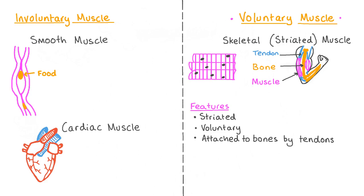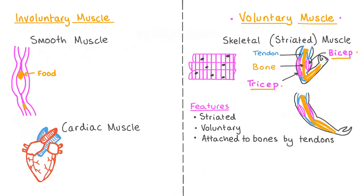Some skeletal muscles are described as antagonistic as they work in a pair where when one muscle contracts the other relaxes, allowing a coordinated movement such as in the arm. For example, the bicep and tricep are antagonistic muscles in the upper arm. Here you can see a contracted bicep and a relaxed tricep when the arm is bent. However, when the arm is stretched out the bicep relaxes and the tricep contracts, which allows the arm to move.